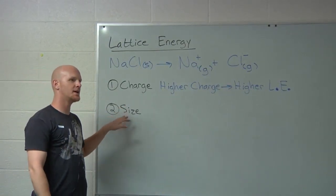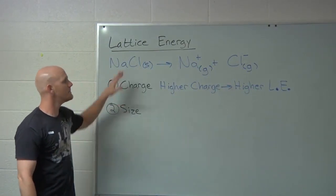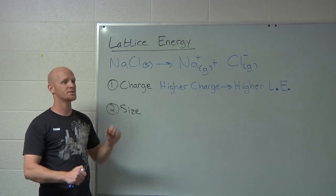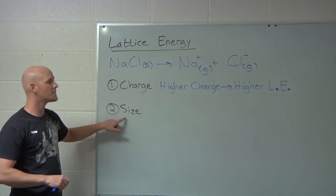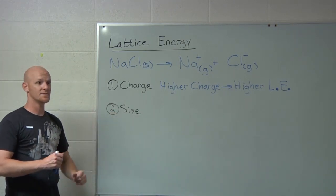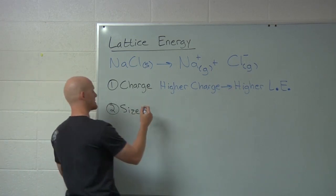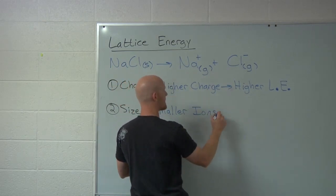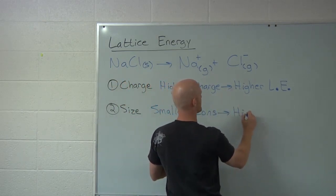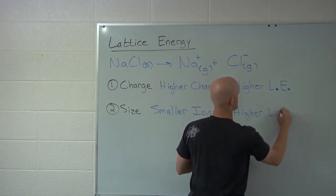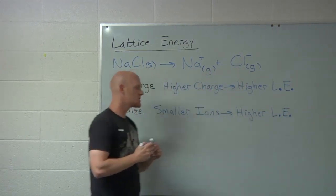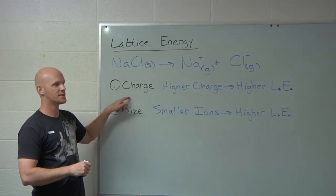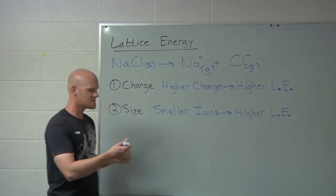Size also comes into play. Lattice energy is a measure of the strength of the ionic bond — and shorter bonds are stronger. So I want smaller ions. Smaller ions lead to a higher lattice energy as well. And again, charge has a more significant impact, which is why it's listed first. These are the two ways comparisons appear on the test.